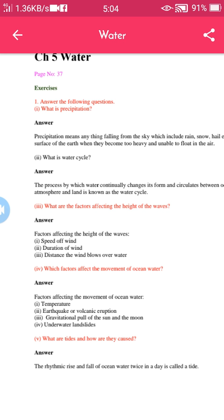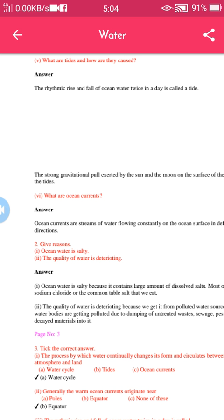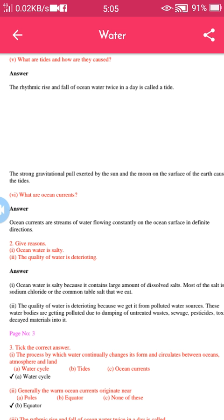Fifth question: What are tides and how are they caused? Answer: The rhythmic rise and fall of ocean water twice in a day is called tides. The strong gravitational pull exerted by the sun and the moon on the surface of the earth causes the tides.